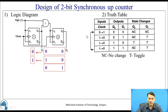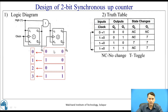So Q2 output changes from 0 to 1. On the next clock pulse, the output of Q1 is 0, which is given to J2 so Q2 remains in the same state, that is 1. But due to the high input, Q1 makes the change from 0 to 1, and hence it is decoded as 3. In this way, this 2-bit up counter counts in ascending order: 00, 01, 10, 11, decoded as 0, 1, 2, 3.